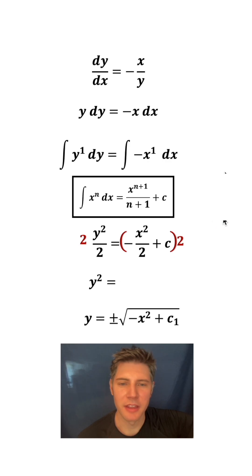And then this 2 distributes here, which just gives us -x², and then we have a 2c. We can define c₁ to equal 2c. Then to solve for y, we square root both sides, and that gives us a solution to our differential equation. This definitely takes some knowledge of calculus, but this is the simplest I could make an introduction to differential equations. Hope you guys like it. Comment on what you'd like me to talk about next. I'll talk to you soon. Bye bye.